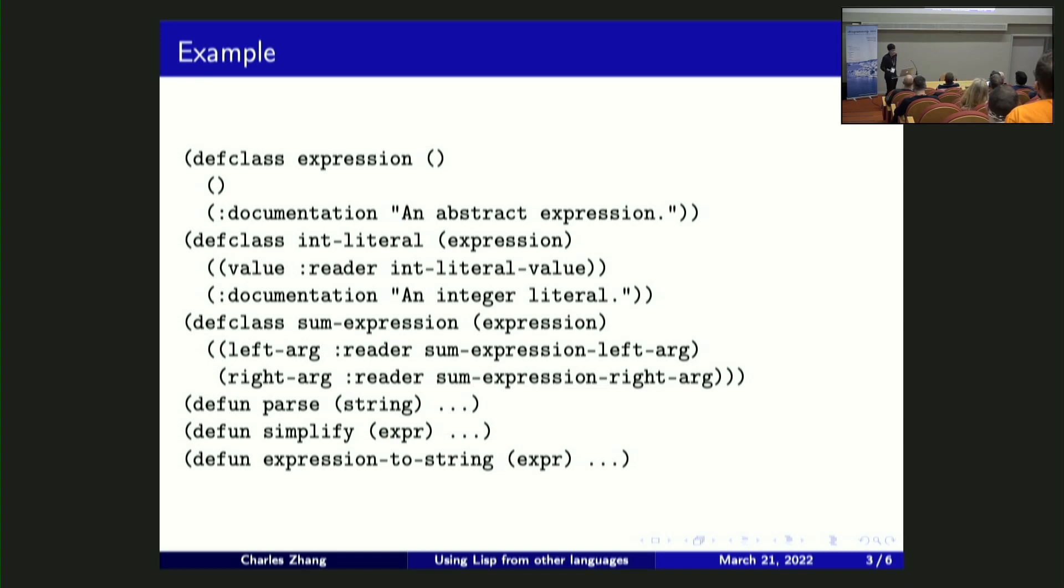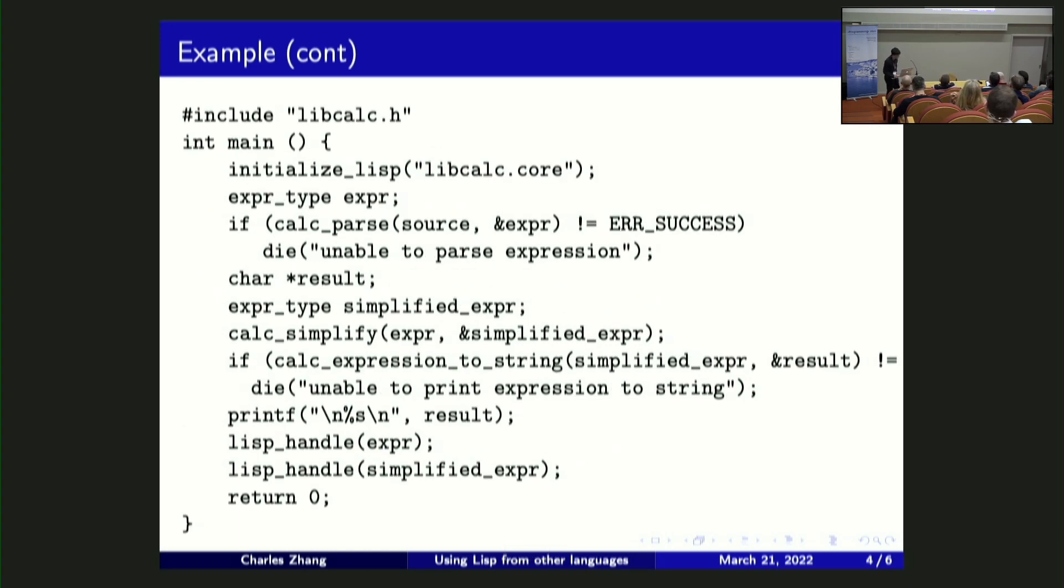And then you want to call it from Python or C because you have some application in C or Python and you just want to use this library. You don't want to rewrite your entire program written in something else into Lisp just to use this library. So this new feature allows you to do something like, you can include a header file with all those functions exposed. You can initialize the Lisp runtime with your core file that has your Lisp code in it. And then you can basically just call the functions like the regular C function.